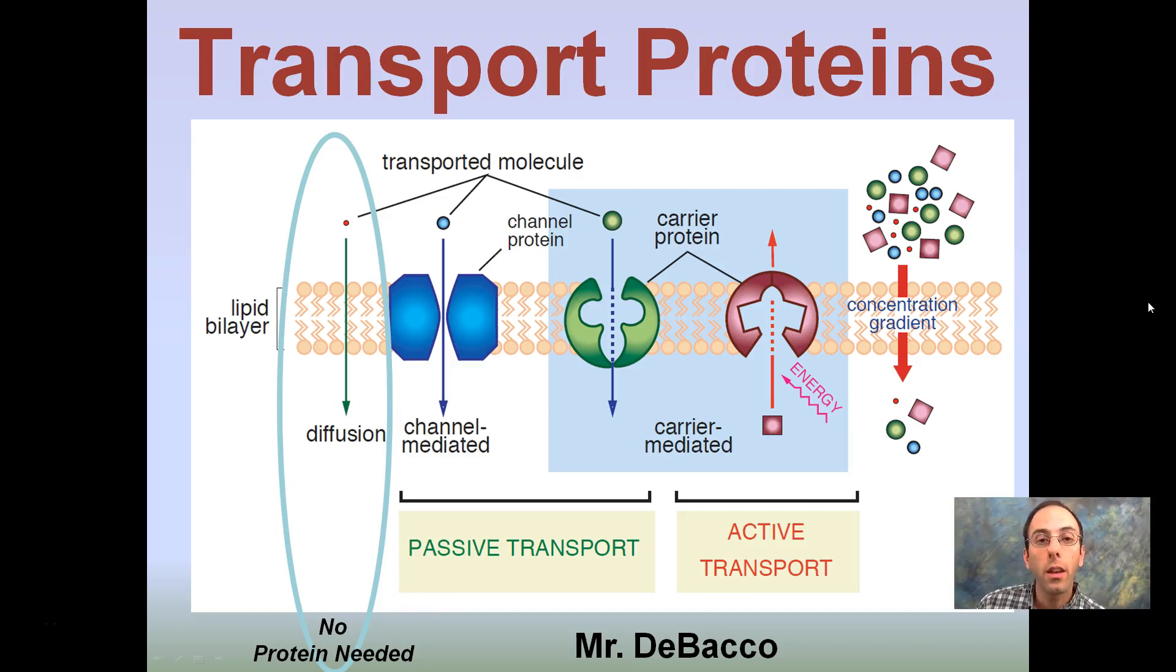The topic of this video is transport proteins. Looking here at our phospholipid bilayer, we see several proteins embedded. Remember, diffusion can occur without any proteins. However, here we're looking at transport proteins. In these examples, we're looking at substances that may need a protein to be able to move them across the phospholipid bilayer. This can be because of their size, because of their charge, for many different reasons. But simply, they need a protein.